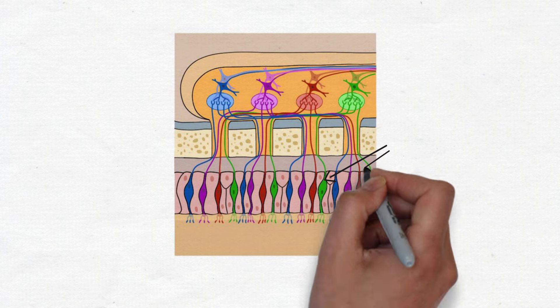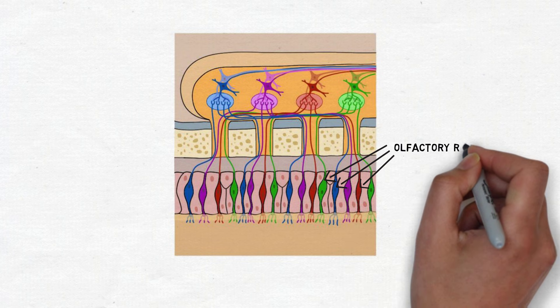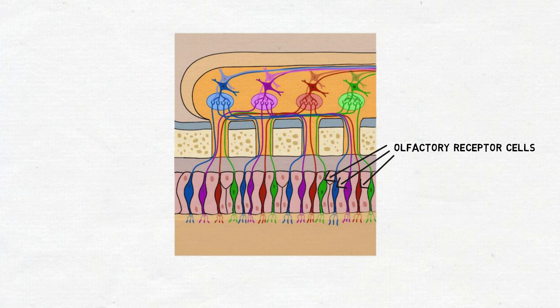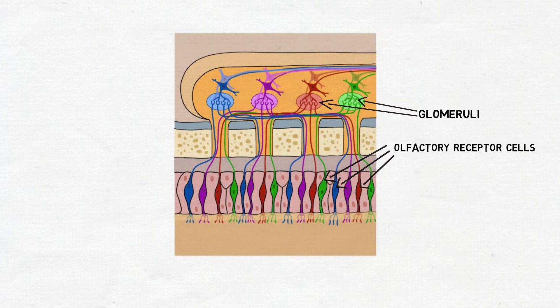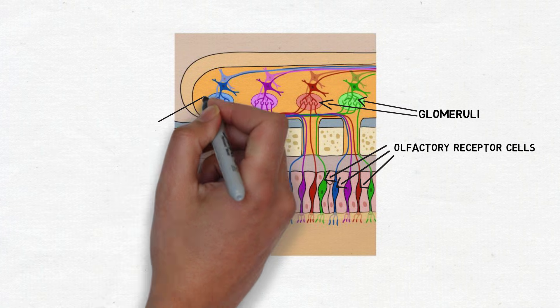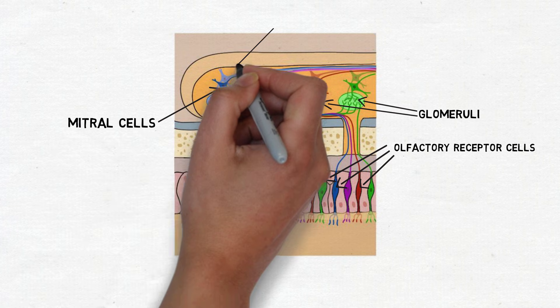In the olfactory bulb, the axons of the olfactory receptor cells converge on the dendrites of olfactory bulb neurons in small clusters called glomeruli. In these glomeruli, the receptor cells form synaptic connections with several types of olfactory bulb neurons, including cells called mitral cells and tufted relay neurons.